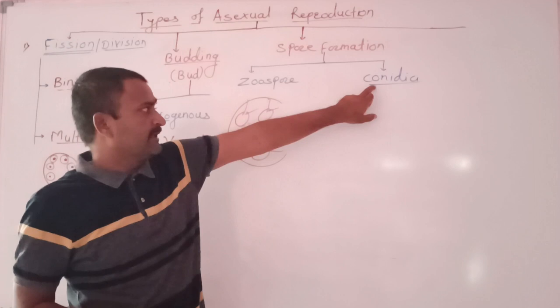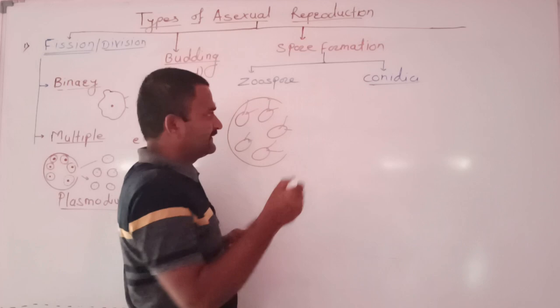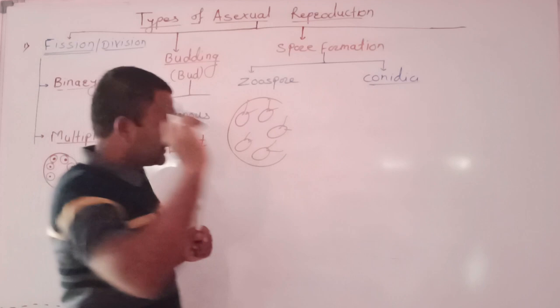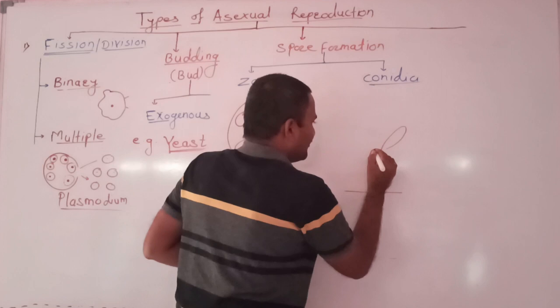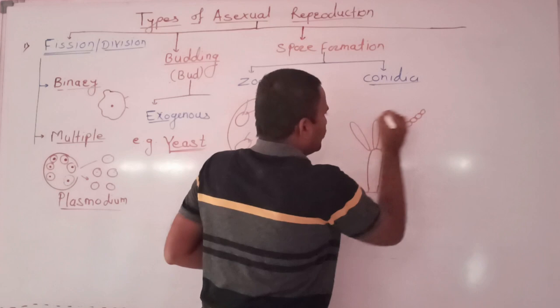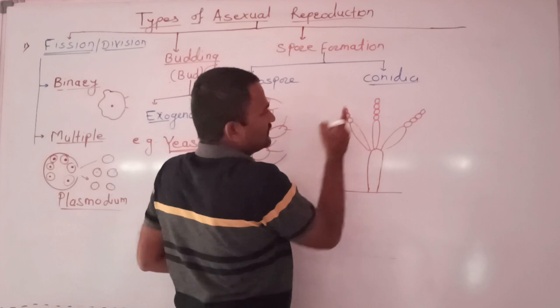Then conidia, these are the non-motile spores which are formed in fungus known as penicillium. Conidia are non-motile spores. They are formed in chains. This is the hypha of the fungus penicillium. It is attached to the substratum. Then this hypha produces branches, and then conidia or spores are formed in chains.